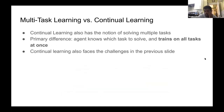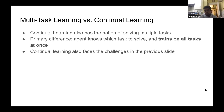An interesting point is that continual learning also has the notion of solving multiple tasks. The primary difference here is that the agent knows which task to solve, and it receives data on all the training tasks at any given point during training. In continual learning, you see task one first, then task two, then task three, and evaluate how well you're doing on tasks seen in your lifetime.